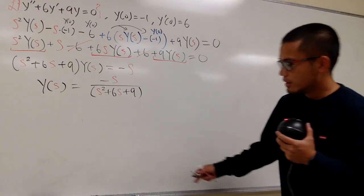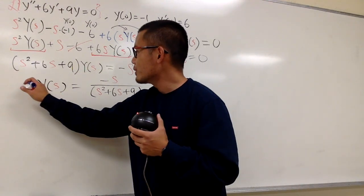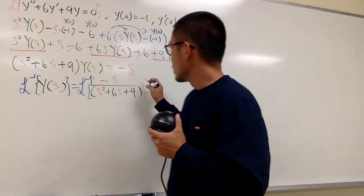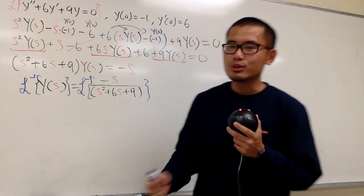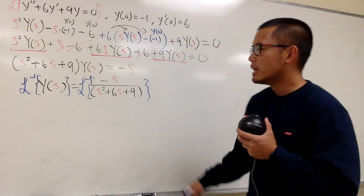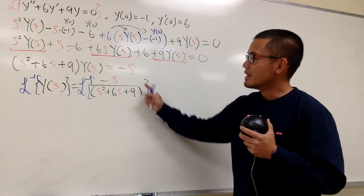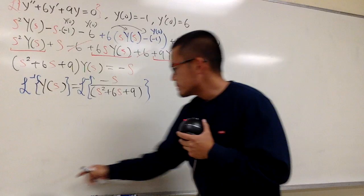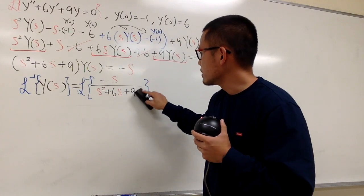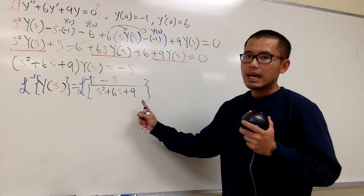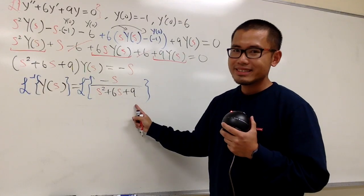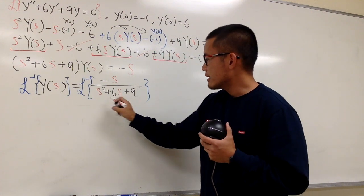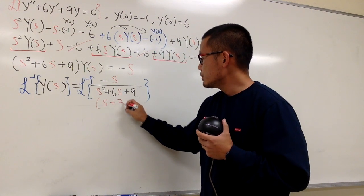To get back to the t world, we have to do the inverse Laplace on both sides. On the right-hand side we'll get y(t), and that's the solution to this initial value problem. Now, how are we going to get the inverse Laplace of that? Notice that on the denominator, we have s plus 3 squared — we can factor it out. So the denominator is just s plus 3 squared. Unfortunately, on the top we have a negative s, so this is not quick right away, but we can still do it with a reasonable amount of work.